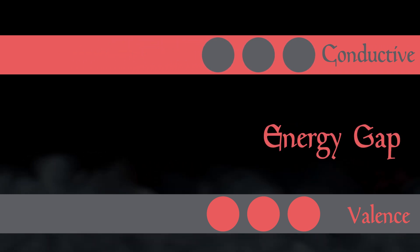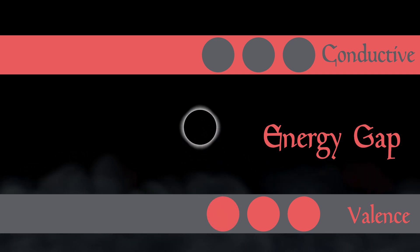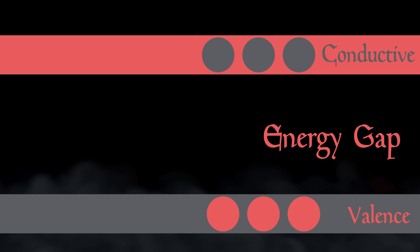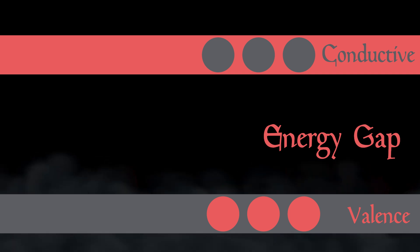The larger the gap, the more energy it takes for electrons from the valence band to move into the conductive band, making it a good insulator like glass and diamonds. Naturally, the smaller the gap, the more conductive the material.